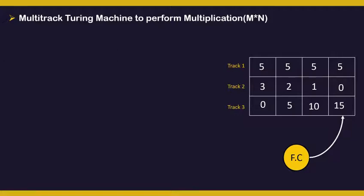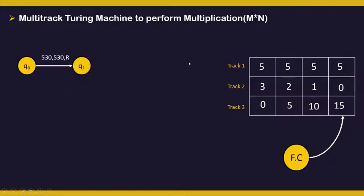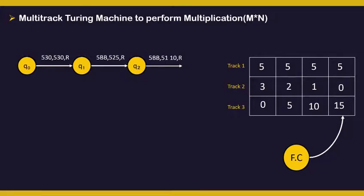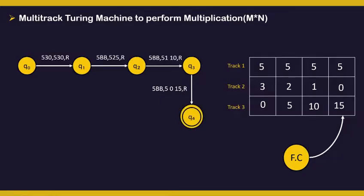Let us now draw the diagram for it. Initially we will be in initial state q0, taking 5, 3, 0 as input. We output 5, 3, 0 without any change and move rightward to go to q1. From q1 we read 5, b, b as input, change it to 5, 2, 5 and move rightward to go to q2. From q2 we take 5, b, b as input, update it to 5, 1, 10 and move rightward to go to q3. From q3 we take 5, b, b as input, update it to 5, 0, 15 and move rightward. Since we have got 0, we go to the final acceptance state.